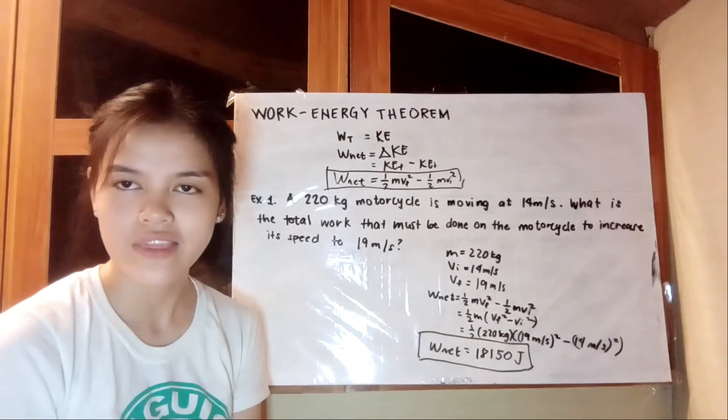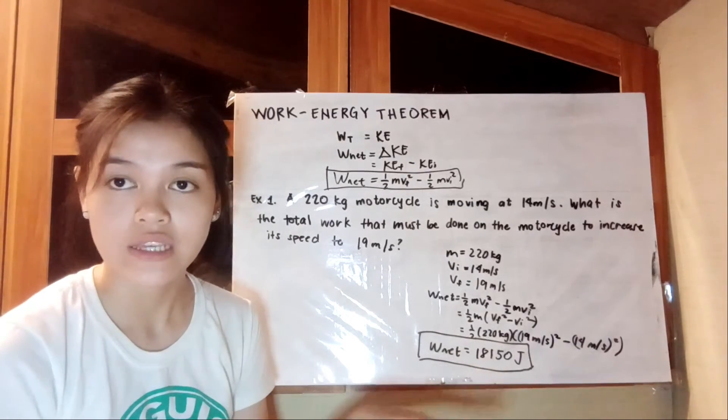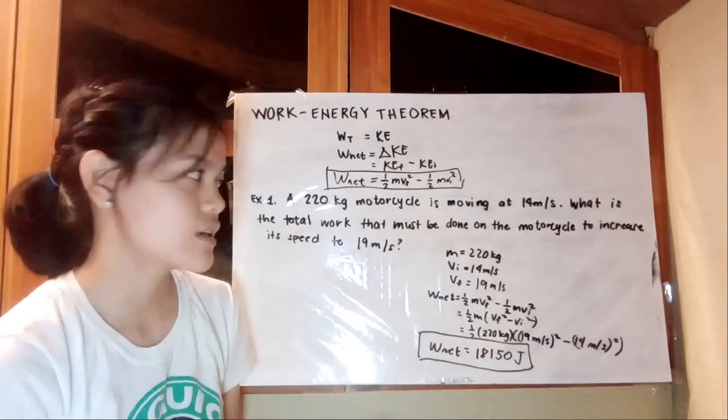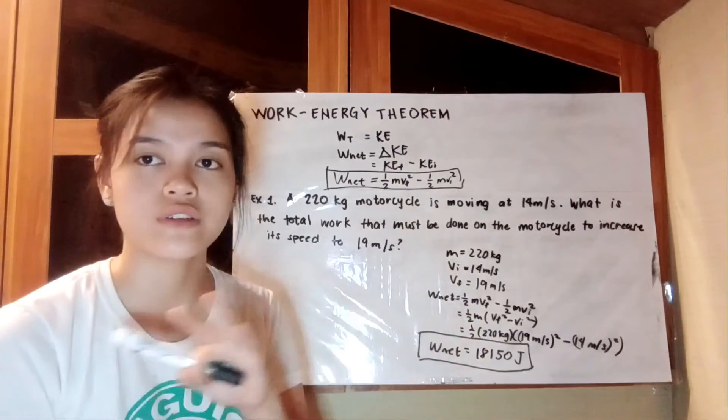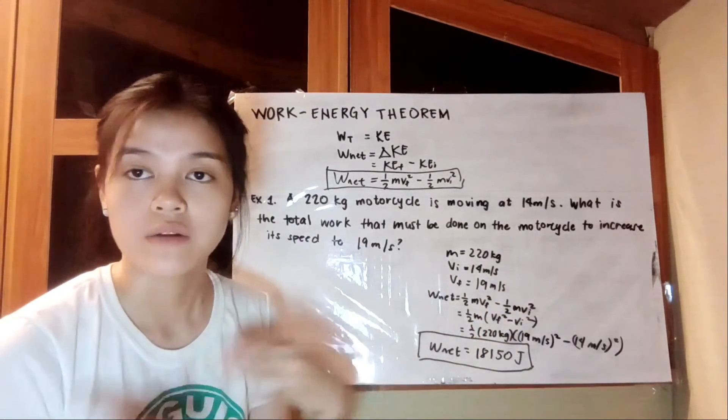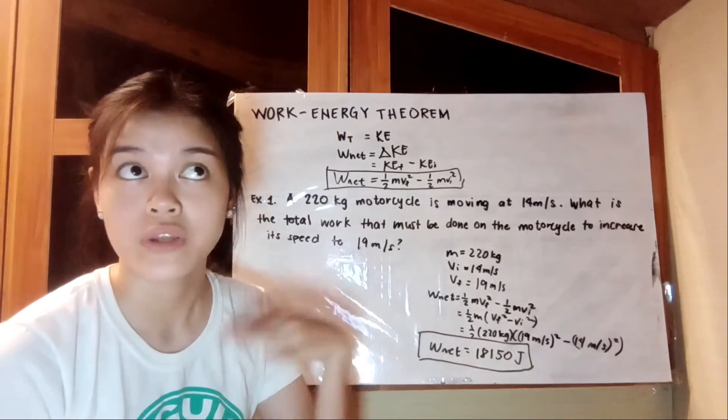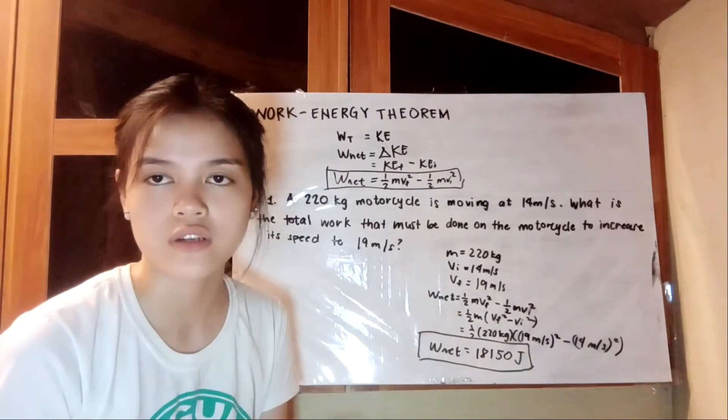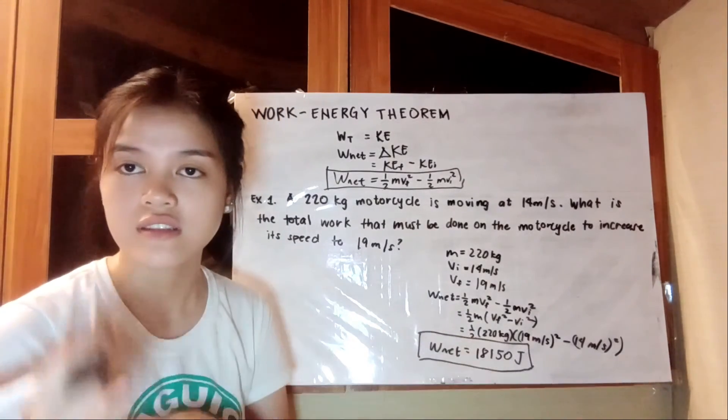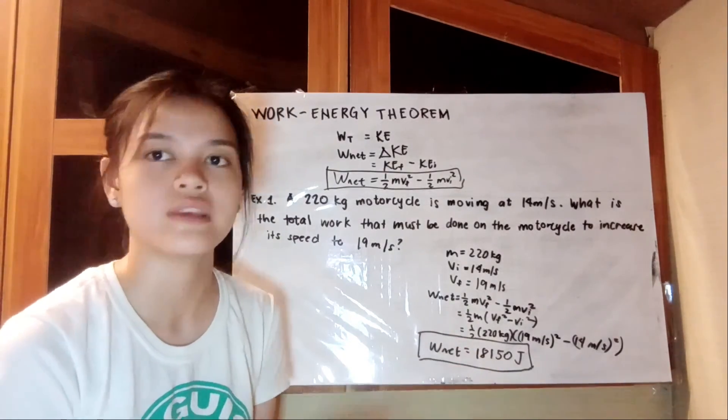We can say that when work is positive, its speed increases. The greater the work, the greater the force applied, the greater the speed that the object will get. And when it's negative, the speed will decrease, because the work gets lesser, the force gets lesser, the distance gets lesser, hence the speed will be lesser.